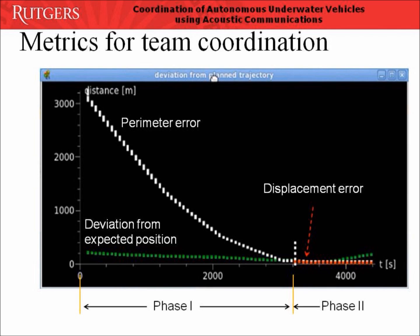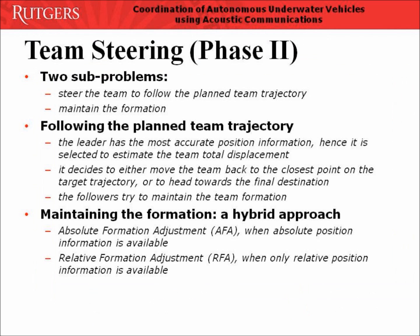For phase 2, we have an additional performance metric: the displacement error plotted in red. It is the average distance of a glider's actual position to its expected position.